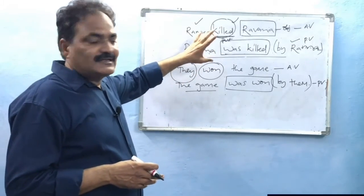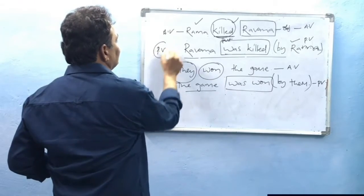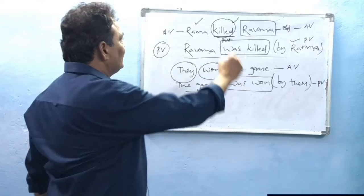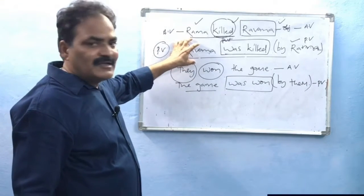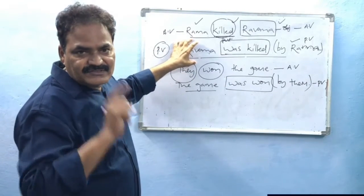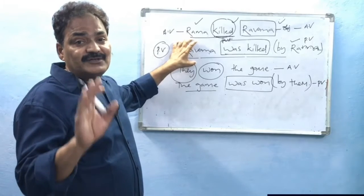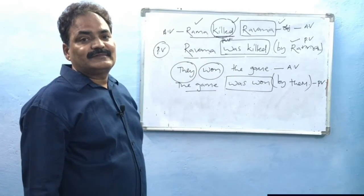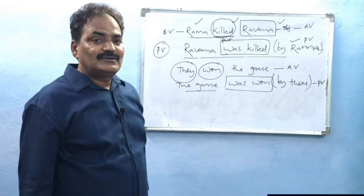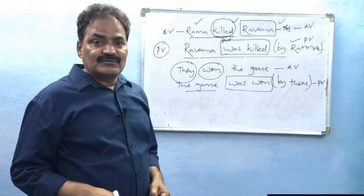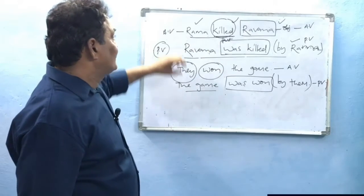Looking at our examples again: in active voice, the object comes at the end; in passive voice, that object comes first. That is the first change. By this we understand: a sentence without an object cannot be changed into passive voice. This is a notable point — if we want to change a sentence into passive voice, we must have an object in that sentence. So the object in active voice becomes the first word (the subject) in passive voice — that is the first rule.